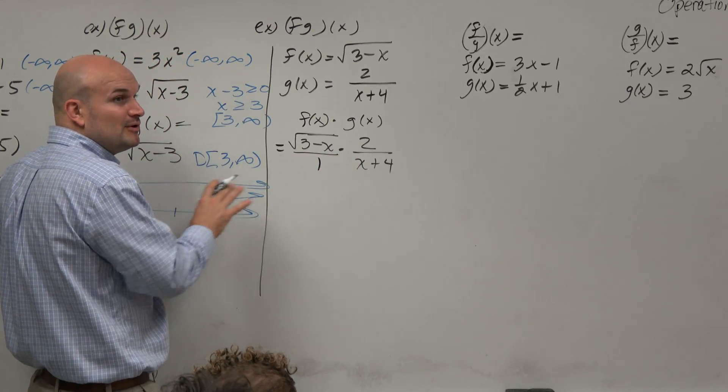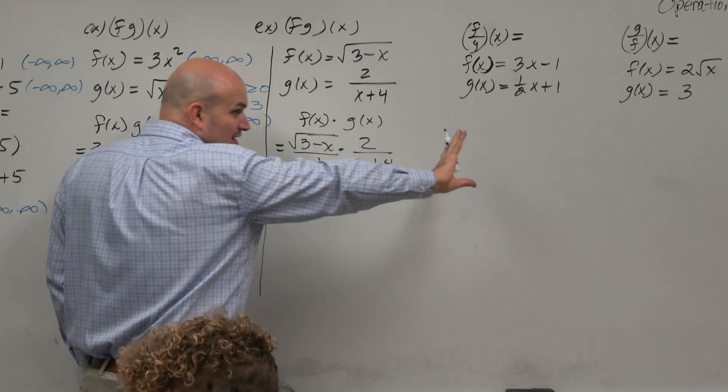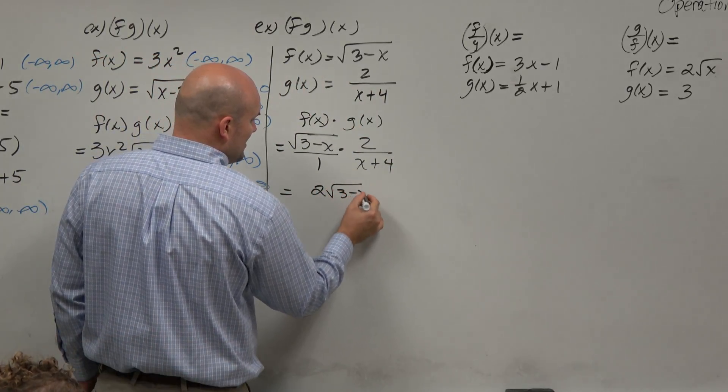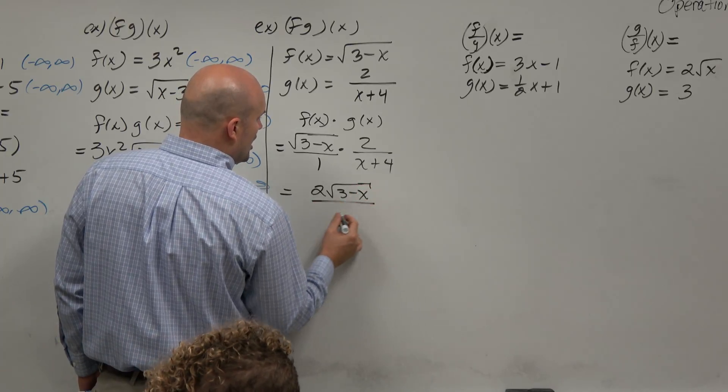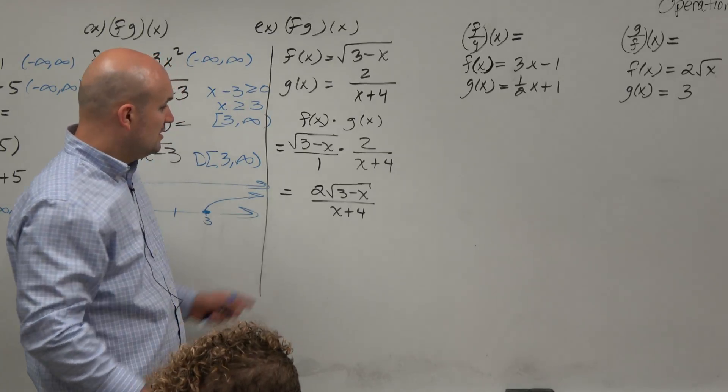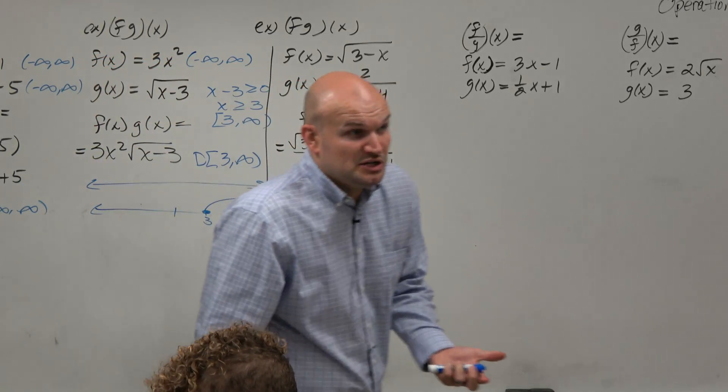Because with fraction operations, it's numerator times numerator, denominator times denominator. So therefore, we end up with 2 times the square root of 3 minus x all over x plus 4, because 1 times x plus 4. So that's our product. There's not really much we can do with that. That's it.